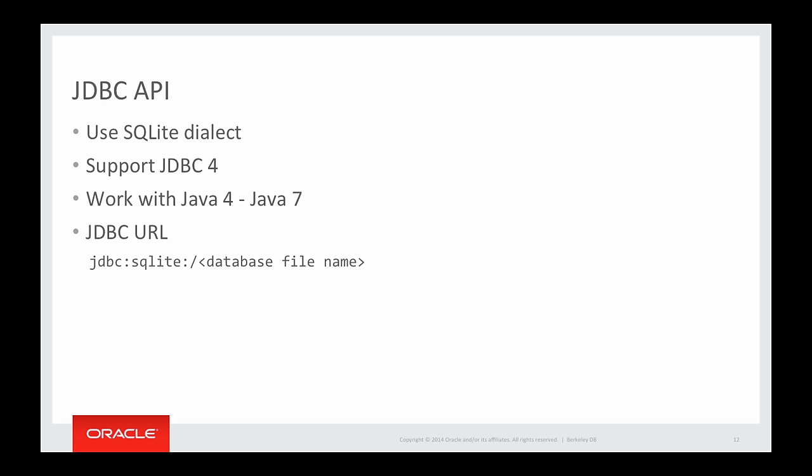For those who prefer the traditional SQL interface, Berkeley DB also provides the JDBC API. Berkeley DB uses the SQLite dialect and supports JDBC 4. The URL for accessing a Berkeley DB database is jdbc:sqlite:/ followed by the database file name.